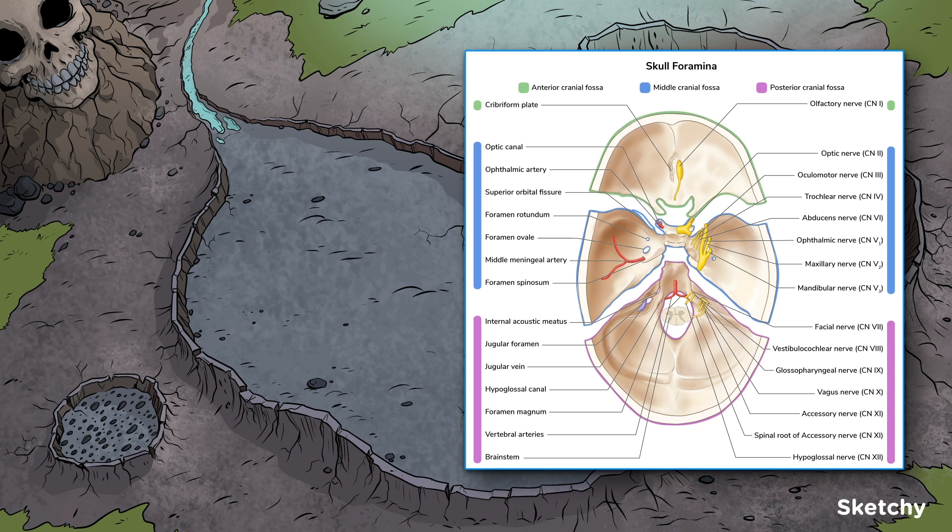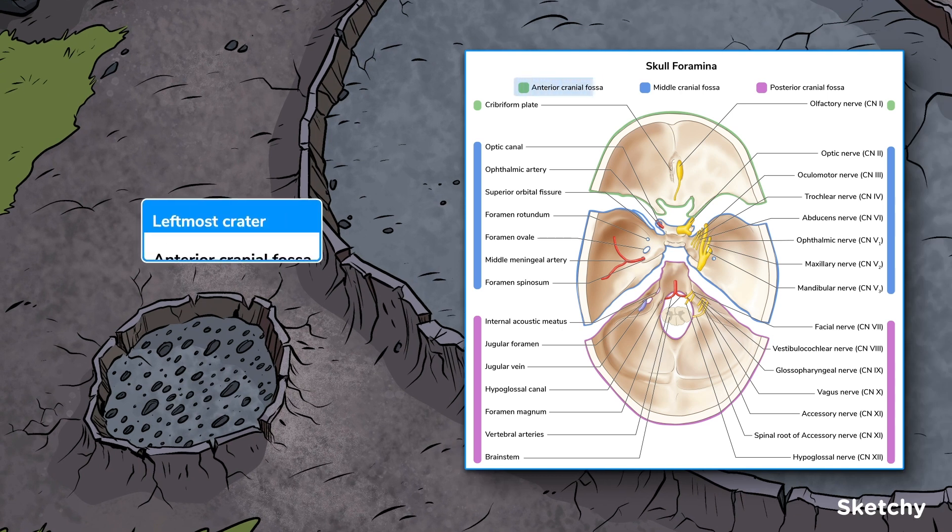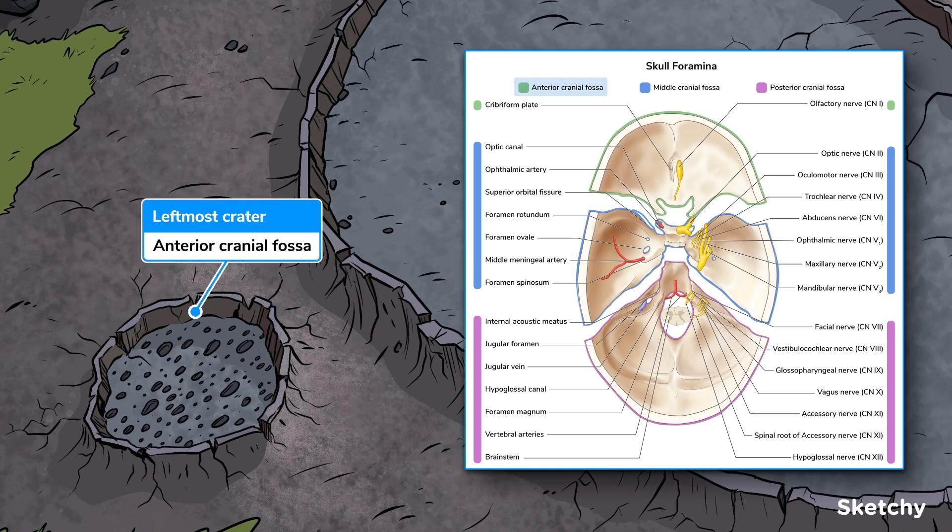And just a heads up, we'll move from left to right, starting at the front of the skull base and working our way to the back. The anterior cranial fossa is denoted here by the crater on the very left. The anterior fossa accommodates the frontal lobes of the brain and is composed of the frontal, ethmoid, and sphenoid bones.